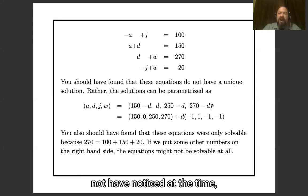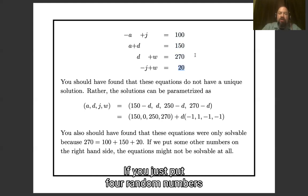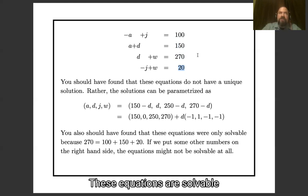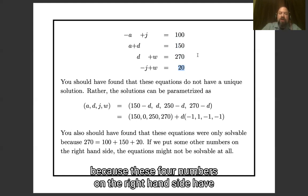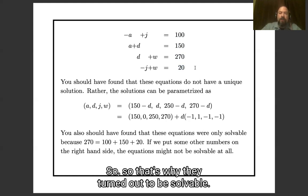Another thing which you may not have noticed at the time, but is going to be important today, is that if you put some random numbers here on the right-hand side of these equations, then they weren't solvable at all. If you just put four random numbers on the right-hand side here and run row reduction, you'll get zero equals one, which means no solutions. These equations are solvable because these four numbers on the right-hand side have a special property that 270 is the sum of 100, 150, and 20. So that's why they turned out to be solvable.